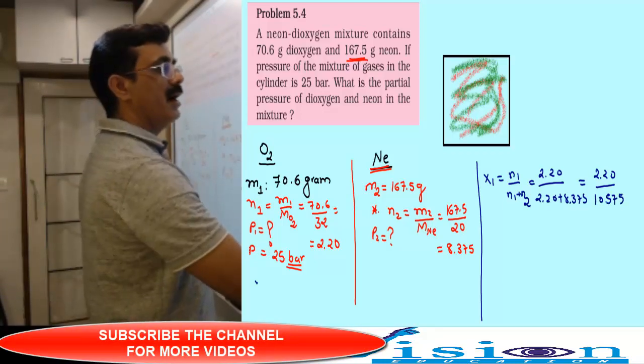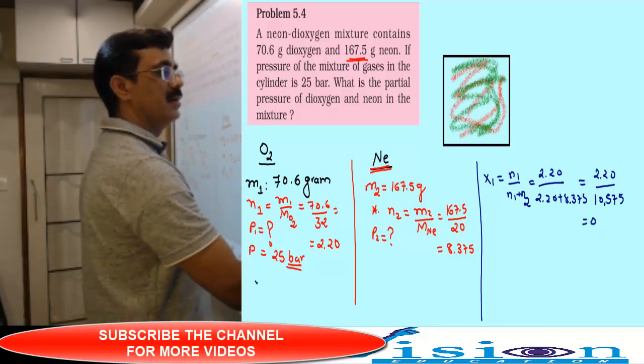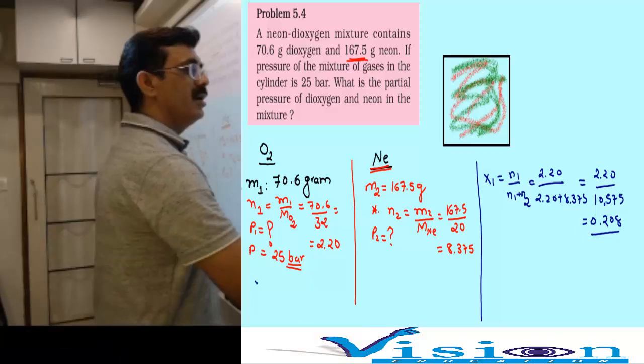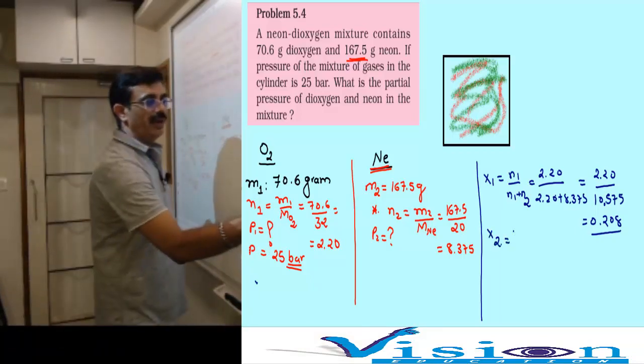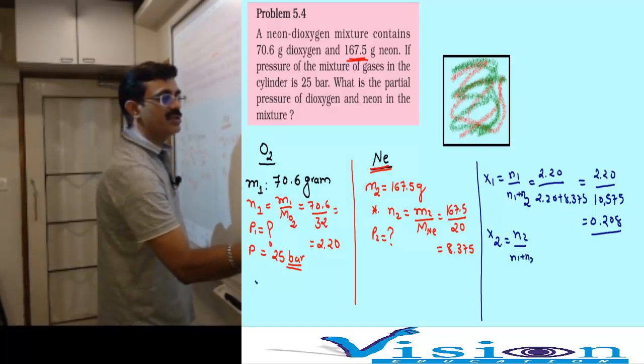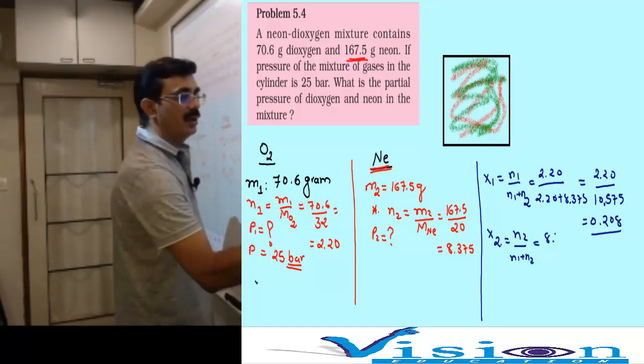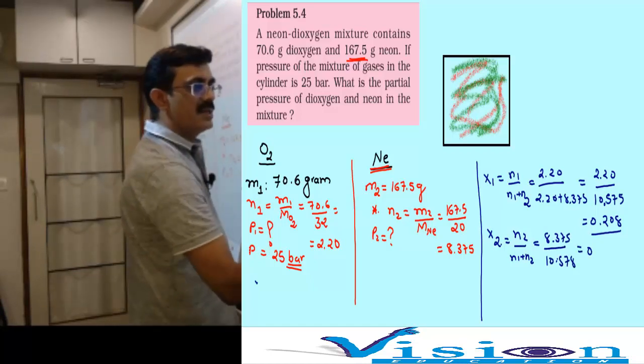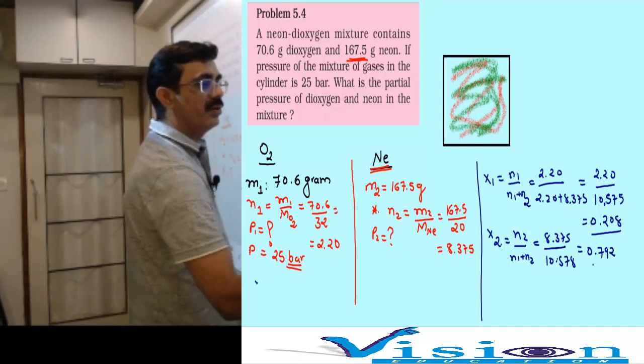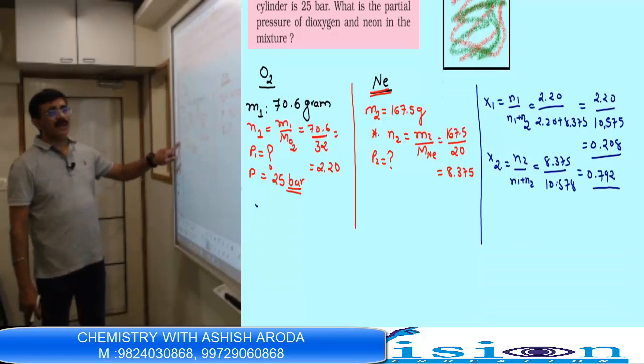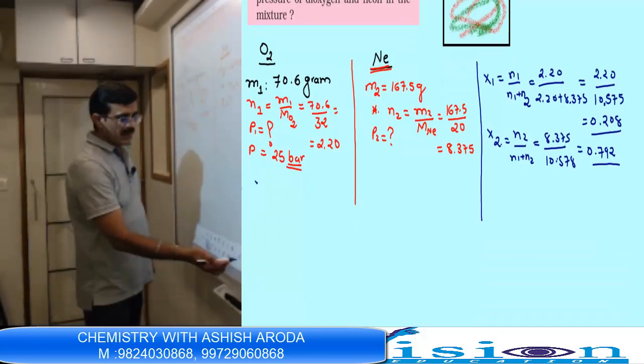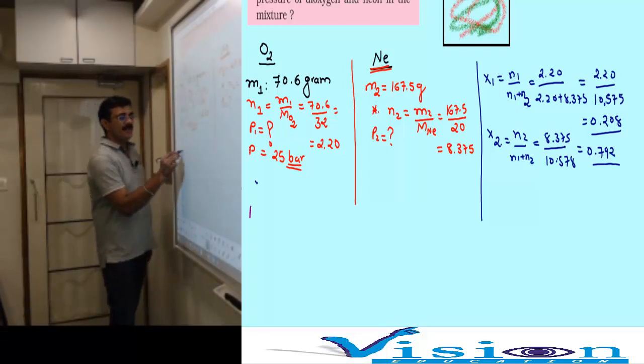Now to find mole fraction x1 equals n1 upon n1 plus n2, which is 2.20 upon 2.20 plus 8.375, equals 2.20 upon 10.575, equals 0.208. And x2 equals 8.375 upon 10.575, equals 0.792.